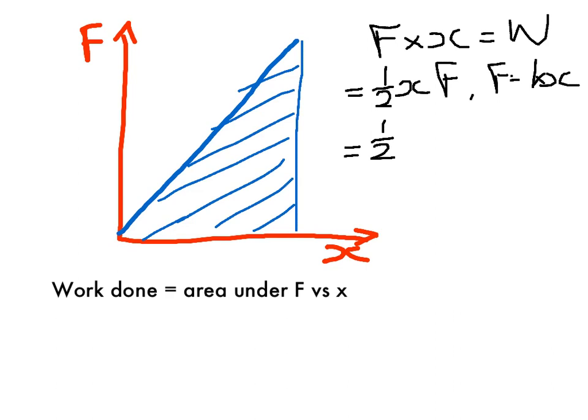We get this expression, a half kx squared. And so that is both the work that's done on the spring and it's the energy stored in the spring, what we call the strain potential energy, SPE. It's equal to a half kx squared, and that's the area under a force extension graph.